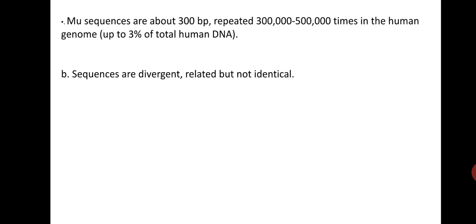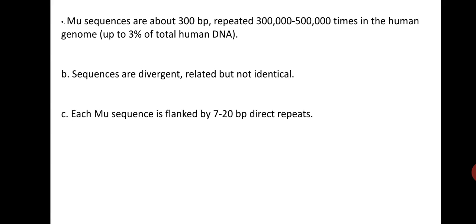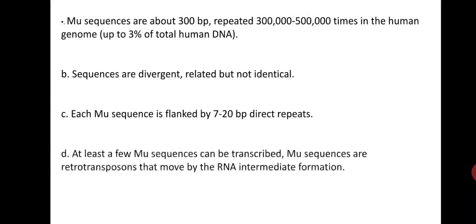The sequences are divergently related but not identical. Each mu sequence is flanked by 7 to 20 base pair direct repeats at its ends. At least a few mu sequences can be transcribed. Mu sequences are retrotransposons that move by RNA intermediate formation — the copy-and-paste mechanism — forming reverse transcriptase and making a DNA copy of RNA, which is then inserted into the genome.